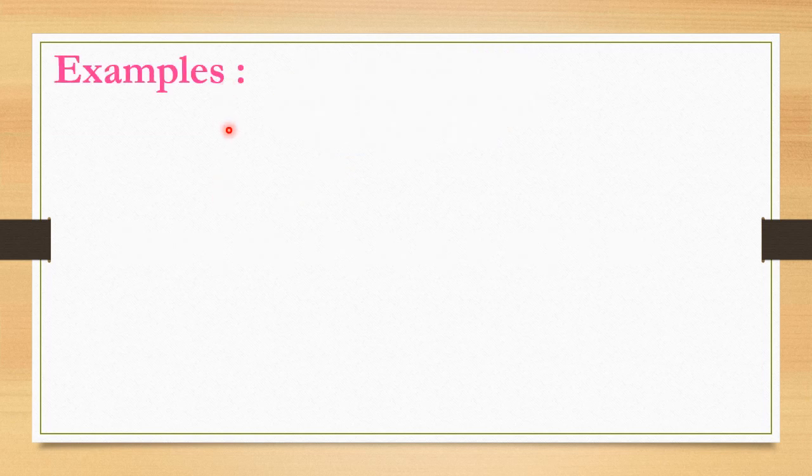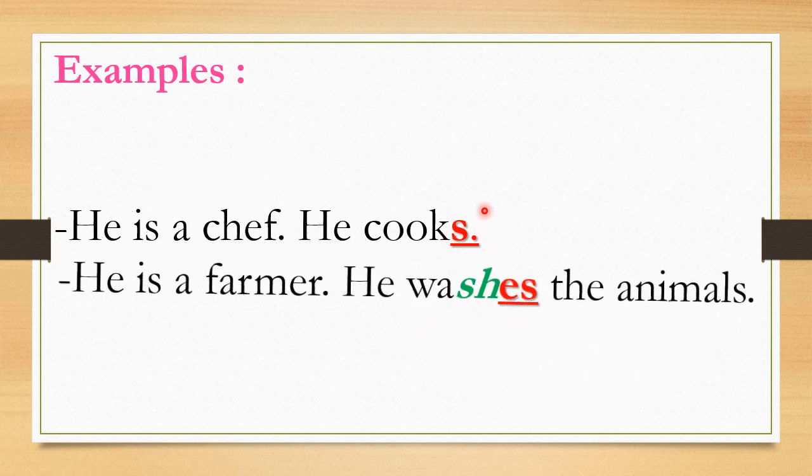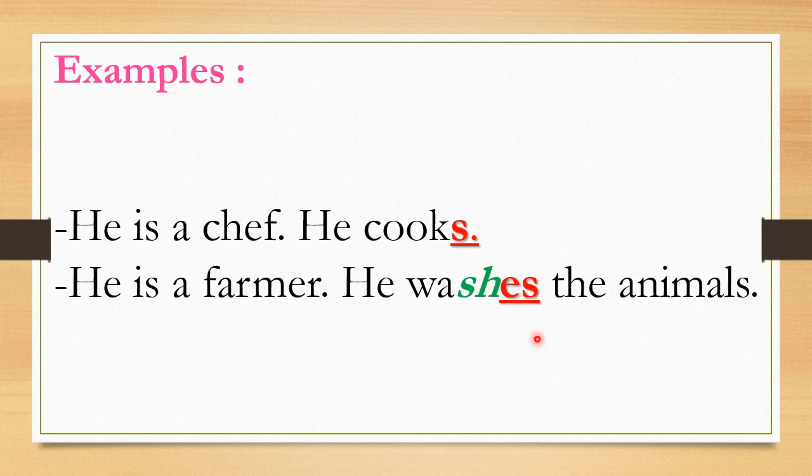Let's see this example together. He is a chef. He cooks. Look. شوفو. احنا أضفنا اس للفعل اللي هو cook. He is a farmer. He washes the animals. Washes. الفعل بينتهي بش. We add to it es.